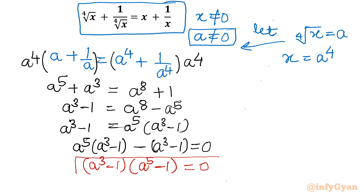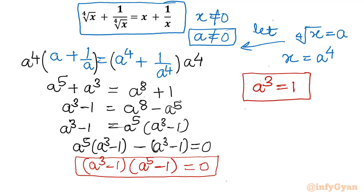This gives us the most important equation: (a³ minus 1)(a^5 minus 1) equal to 0. From here I will generate f equal to 0 or g equal to 0. So I can write a³ equal to 1 — meaning we are going to find the cube roots of unity — and the second equation is a^5 equal to 1, meaning we find the fifth roots of unity. We will solve each one by one.